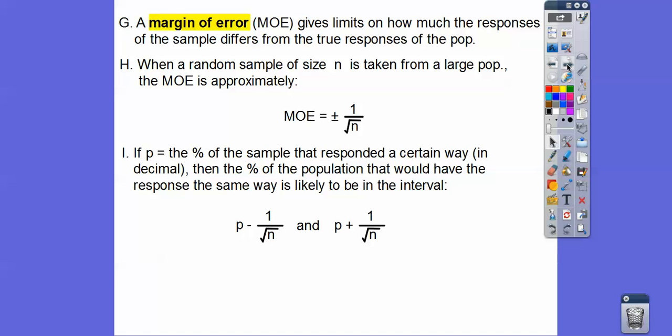When a random sample size of size n is taken from a large population, then your margin of error is approximately given to you by plus or minus 1 over the square root of whatever your sample size number is. That's going to give us what's called our confidence interval. If P is your percent of the sample that responds in a certain way, then the percent of the population that would have a response in that same way would be given by this P plus or minus your margin of error. Here's P minus the margin of error, here's P plus the margin of error.